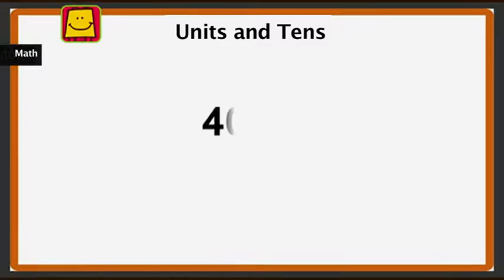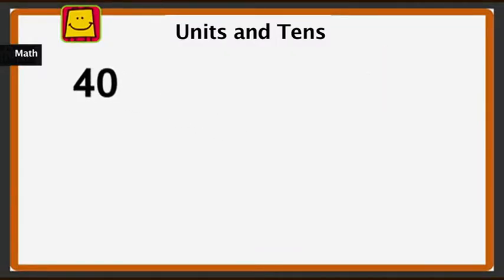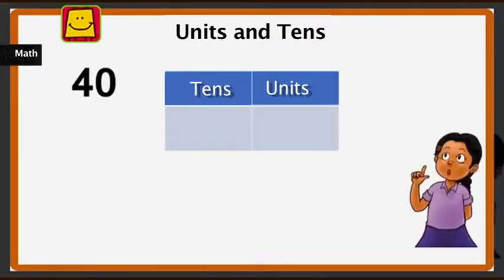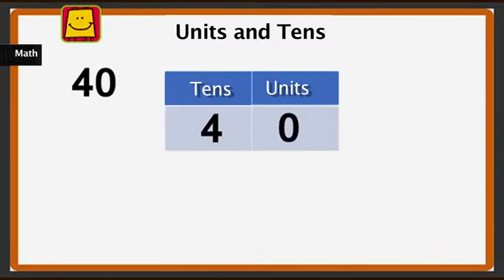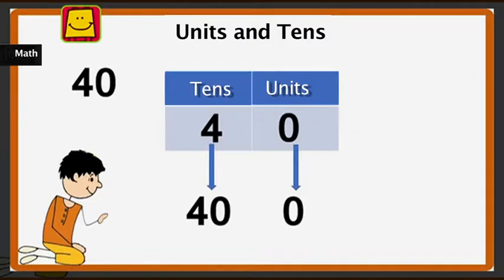Now let us look at another number. The number is 40. Let us see the units and tens. What number will be in the tens place? That's right, 4. And this time the units place has 0. What does 4 tens mean? 4 tens is 40, and we have 0 in the units place, which is 0. When we add 0 to 40, we get 40.